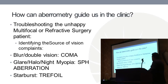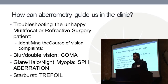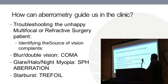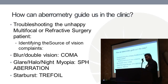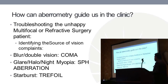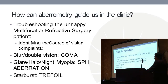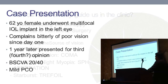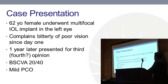We can clarify what patients are complaining about into a scientific, physical optical property. When patients complain about blur or double vision, most of the time they'll have some induced coma. If they're talking about glare, halos, and difficulty seeing at night, that's typically spherical aberration. Starburst is usually a trefoil pattern, and we can see this in the wavefront analysis we get from the iTrace.